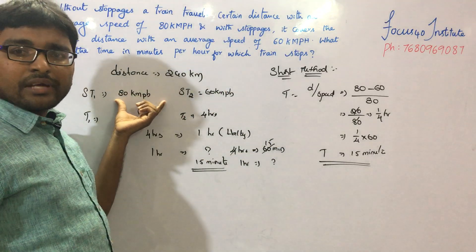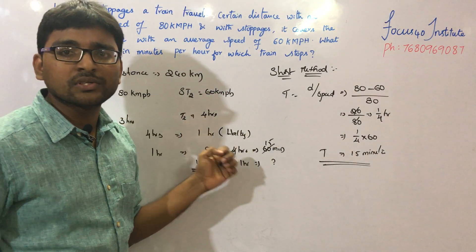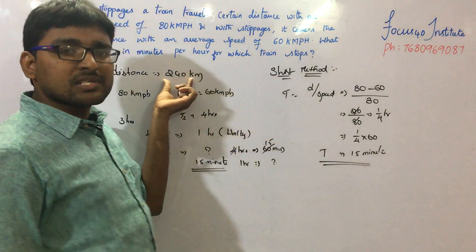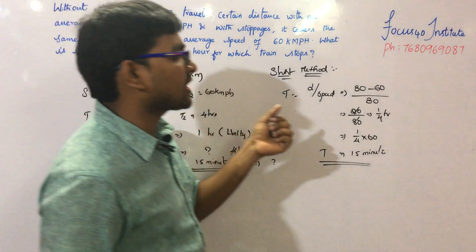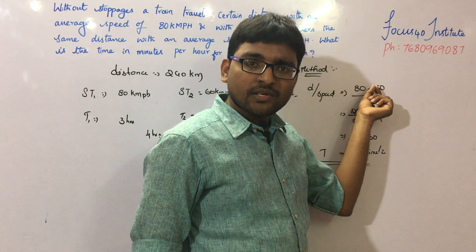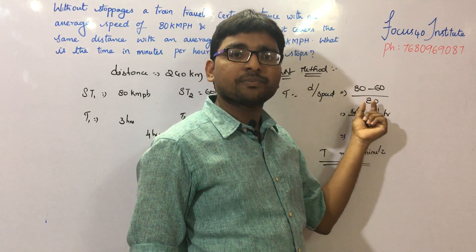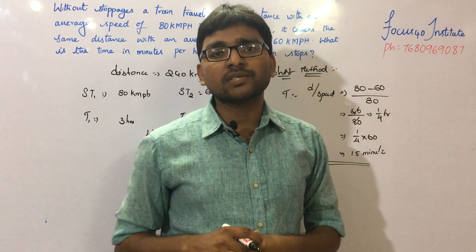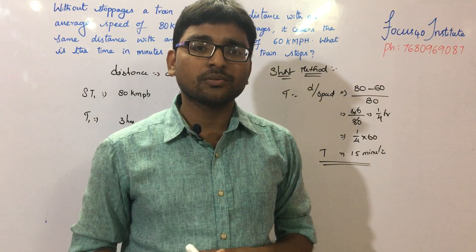This is the basic method and this is the short method. In the short method, the speed difference divided by the maximum speed gives the fraction of time stopped. Both methods give the answer: 15 minutes. The concept of stoppages is easy to solve using either method. Thank you.